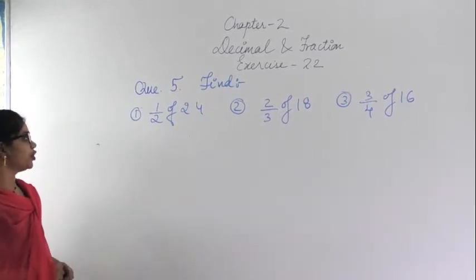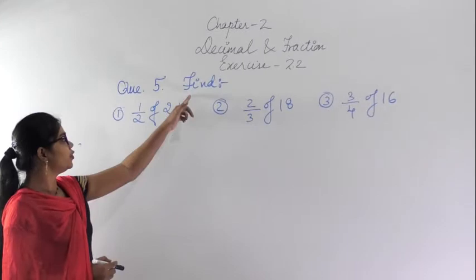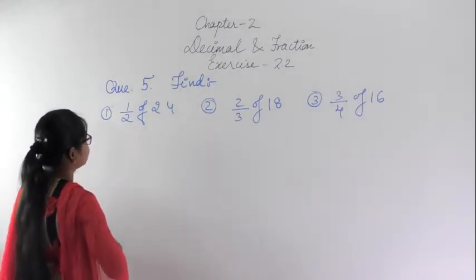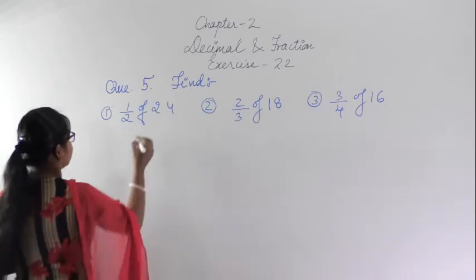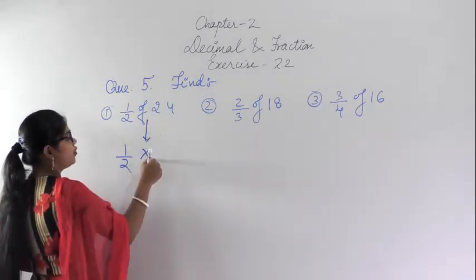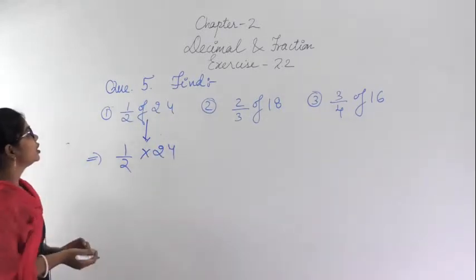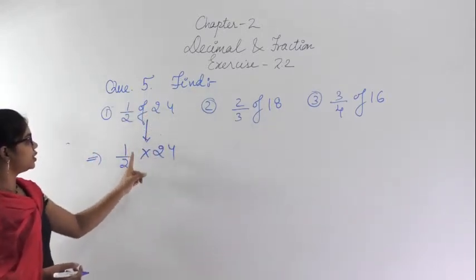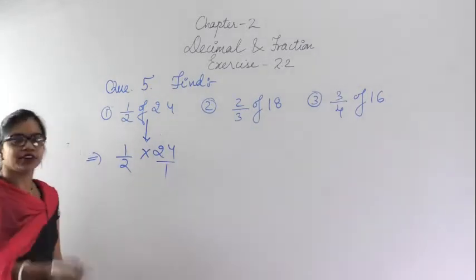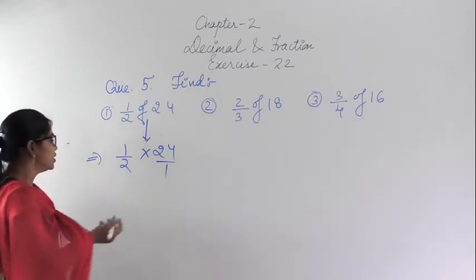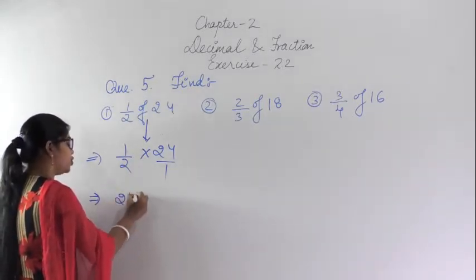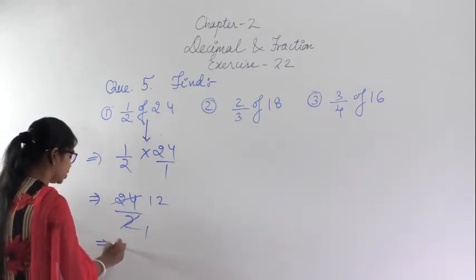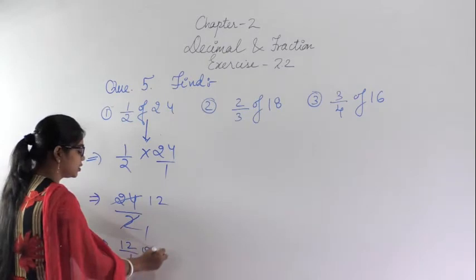This is question number 5 of Exercise 2.2. The question says find the product — here 'of' means multiplication. So 1/2 of 24 means 1/2 multiplied by 24. Write 24 as 24/1. You can cancel: 1 into 24 is 24 upon 2 — cancel it. 2 ones are 2, 2 twos are 4, so the answer is 12/1, or simply 12.